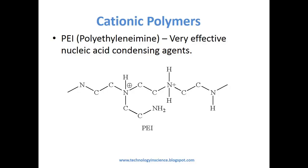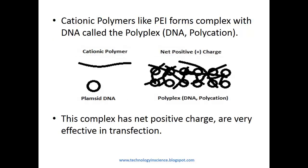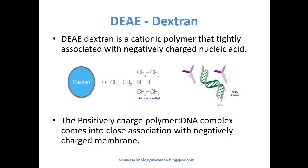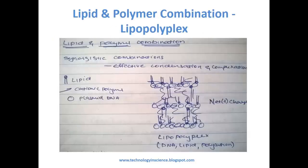PEI is a very effective nucleic acid condensing agent. Cationic polymers like PEI form complexes with DNA called polyplexes. This complex has a net positive charge and is very effective in transfection. DEAE dextran is a cationic polymer that tightly associates with negatively charged nucleic acid. The positively charged polymer-DNA complex comes into close association with the negatively charged cell membrane. Lipopolyplexes are a combination of lipids and cationic polymers which can form complexes with DNA and aid in effective transfection.